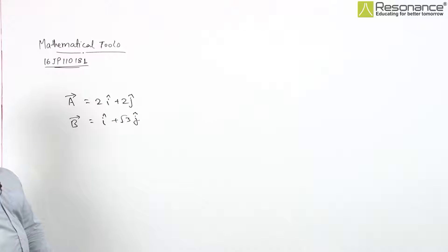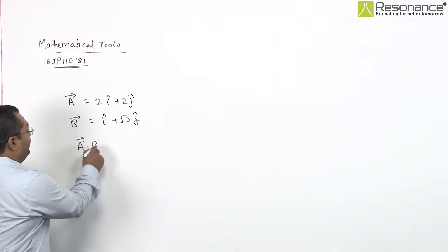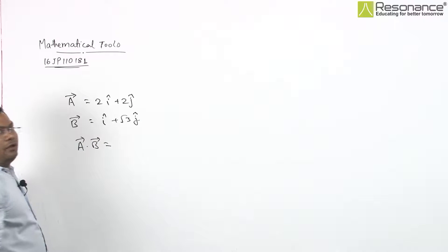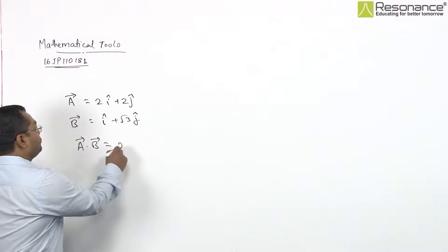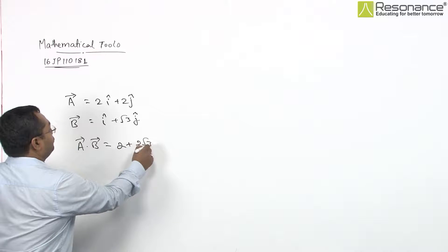We have to find the angle between these two vectors. So for angle, first of all, we find A dot B. A dot B will be 2 plus 2 root 3.